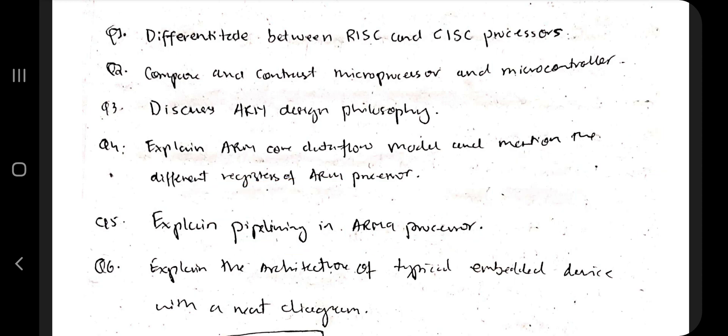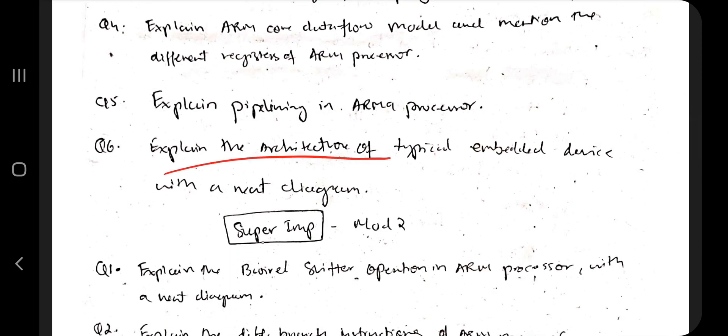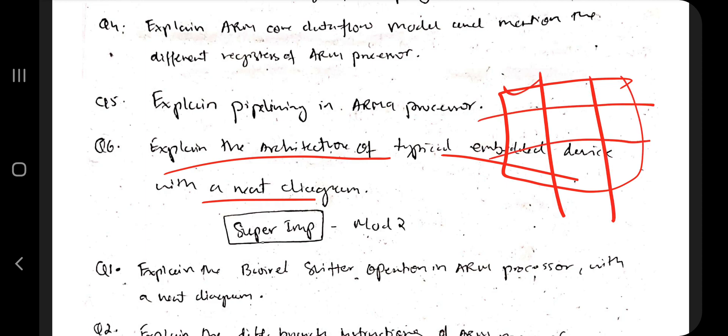The last one is explain the architecture of typical embedded device with a diagram. Basically, after the architecture, say what are the components used, what are its features, how they work together and produce the output, where all it is used, what are the advantages and disadvantages. Whatever I mentioned, you have to not miss any of those. If you write this much, then only you will get good marks.